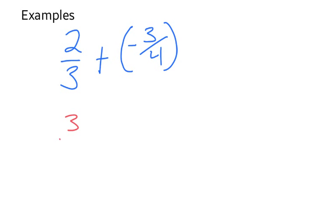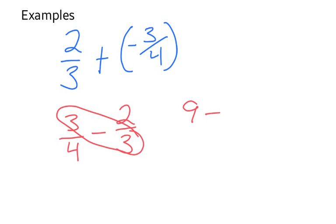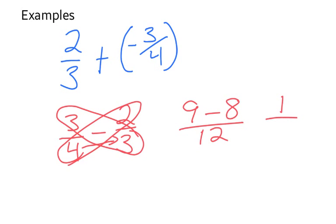So I'm going to switch it around and say 3 fourths minus 2 thirds, finding the difference between the two numbers. I'll bowtie 3 times 3 is 9 minus 4 times 2 is 8, all over the product of the denominators 4 times 3 is 12. 9 minus 8 is 1 over 12.